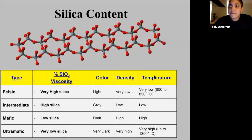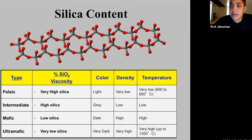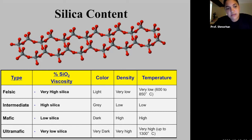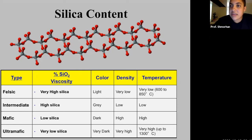We know that we have four main kinds of magma — think about the four types of igneous rocks: felsic, intermediate, mafic, and ultramafic. Felsic igneous rocks or felsic magmas contain a higher amount of silica, which means more SiO₂. Whereas conversely, mafic and ultramafic magmas or igneous rocks contain lower amounts of silica, meaning less of these SiO₂ molecules.